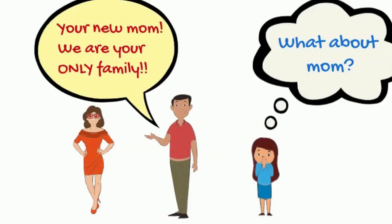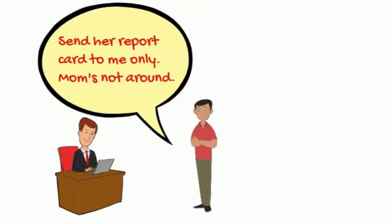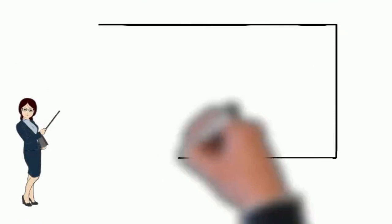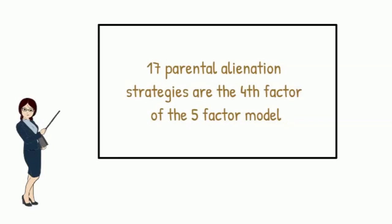Referring to step-parent as mom or dad and encouraging the child to do the same. Withholding medical, academic, and other important information from the targeted parent and keeping the targeted parent's name off of medical, academic, and other relevant documents. The presence of these alienating behaviors makes one part of the five-factor model for diagnosing parental alienation.